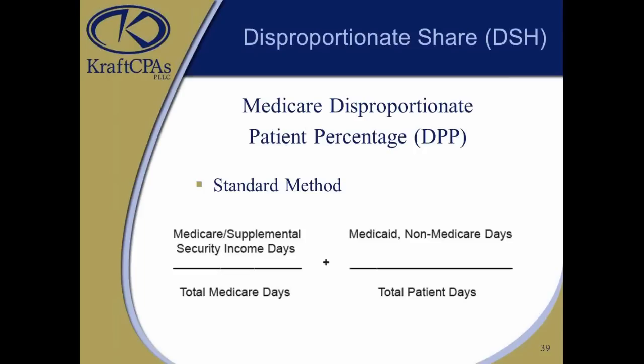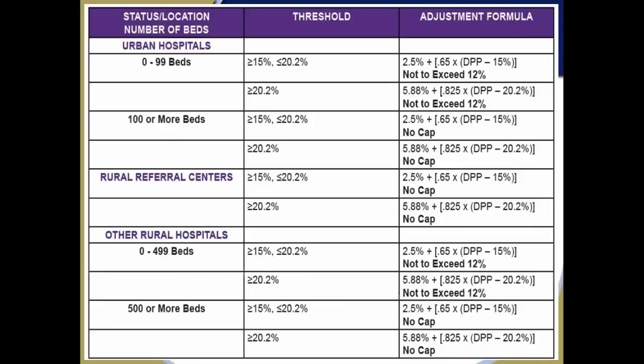The next slide shows the threshold to qualify for DSH depending on the type of hospital and the formula. I stress: if your hospital currently does not qualify for disproportionate share, do the calculation every year when you submit your cost report. CMS won't do it for you and come back and say you qualified — that's something you have to do on your own, and if you qualify, report it appropriately on your cost report.